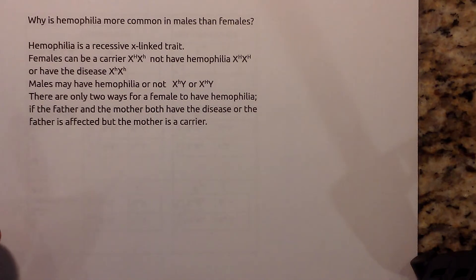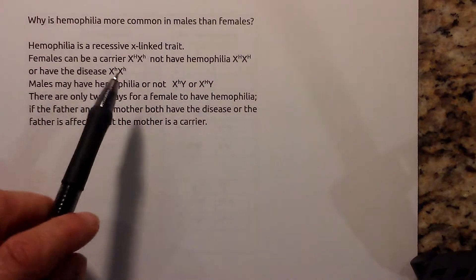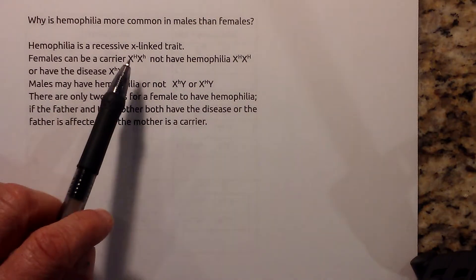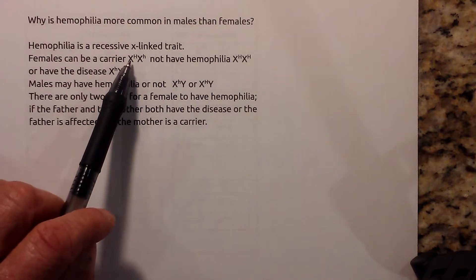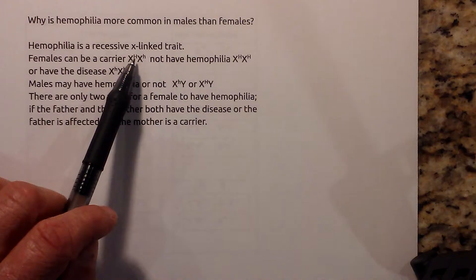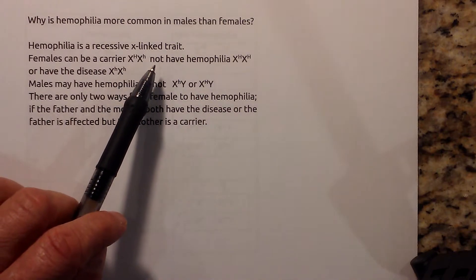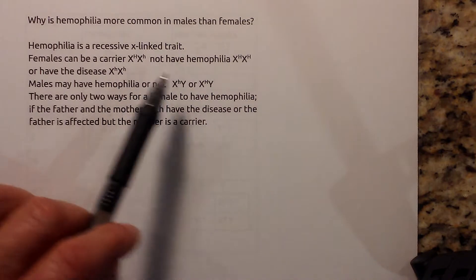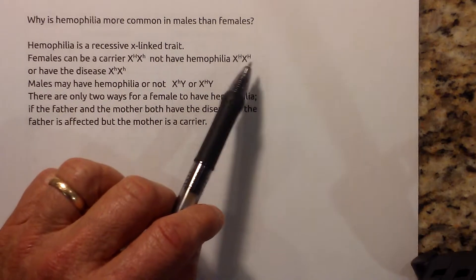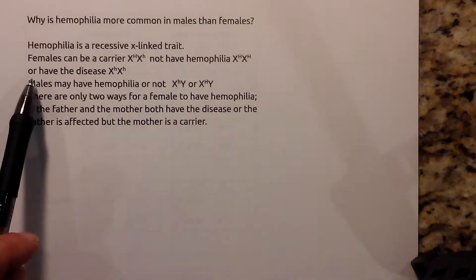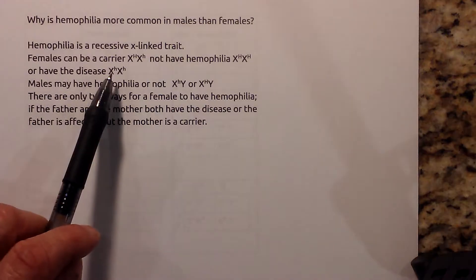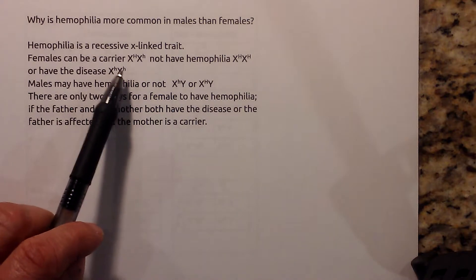Hemophilia is a recessive X-linked trait. Females can be a carrier, which is written XX with a capital letter and a lowercase. They may not have hemophilia, which would be two capital letters, or they can have the disease. Since it's recessive, you're going to have two lowercase letters.